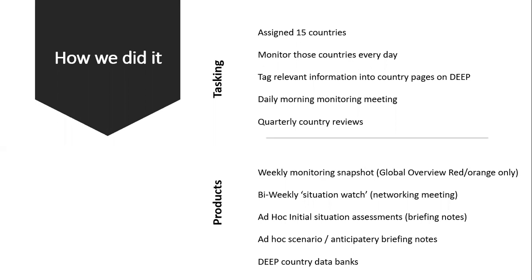From that we would produce some products. The biggest task was the weekly monitoring snapshot — the global overview — which was basically a summary of what's going on in a country in terms of the humanitarian context, normally broken down by sector and geopolitics and what the geopolitics are doing and affecting that country. That was updated weekly for our red and orange countries — quite a big task. We would also do bi-weekly situation watches, which were network meetings with all the other interagency actors working in IM — meant to be a collaborative way of sharing situational developments. But it more turned into us basically doing a briefing to the rest of the humanitarian sector on what was happening in the world.